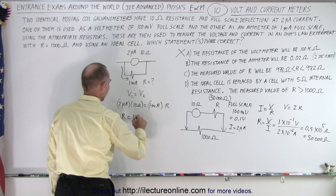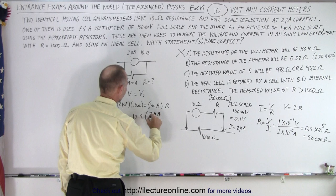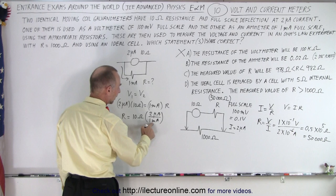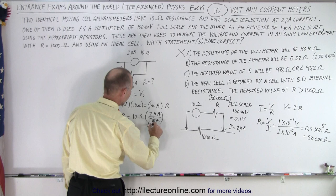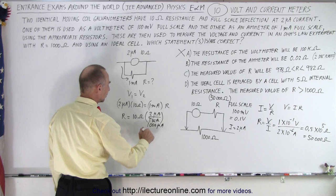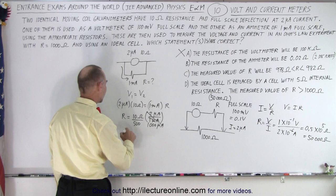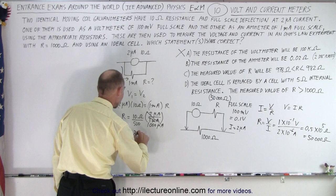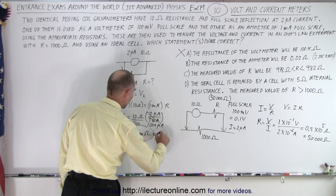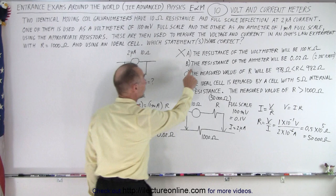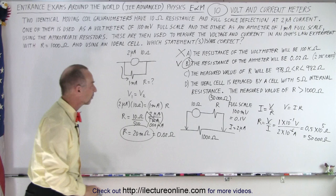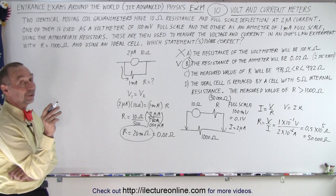Solving this for R, we can say that R is equal to 10 ohms times the ratio of 2 microamps divided by 1 milliamp. The ratio here, 1 milliamp is 1,000 microamps, which means it's 1 over 500. So that's the same thing as dividing this by 500. So divided by 1,000 times 2, which is equal to, divided by 1,000 is 10 milli-ohms times 2 is 20 milli-ohms. So the resistor we need is 20 milli-ohms, which is 0.02 ohms. For the ammeter, so when we read part B, the resistance of the ammeter will be 0.02, we say that this is indeed correct. So the second part, part B, is indeed correct.